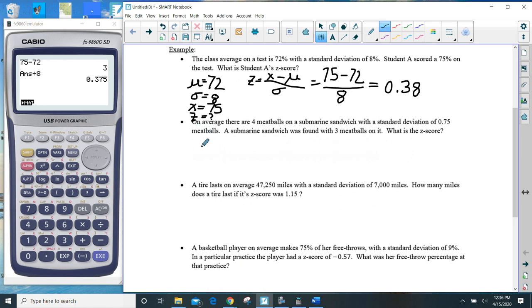Next. On average, there are four meatballs on a submarine sandwich. So the average, on average, there are four meatballs on a sub with a standard deviation of 0.75. A submarine sandwich was found with three meatballs on it. That's a value. What is its Z-score?